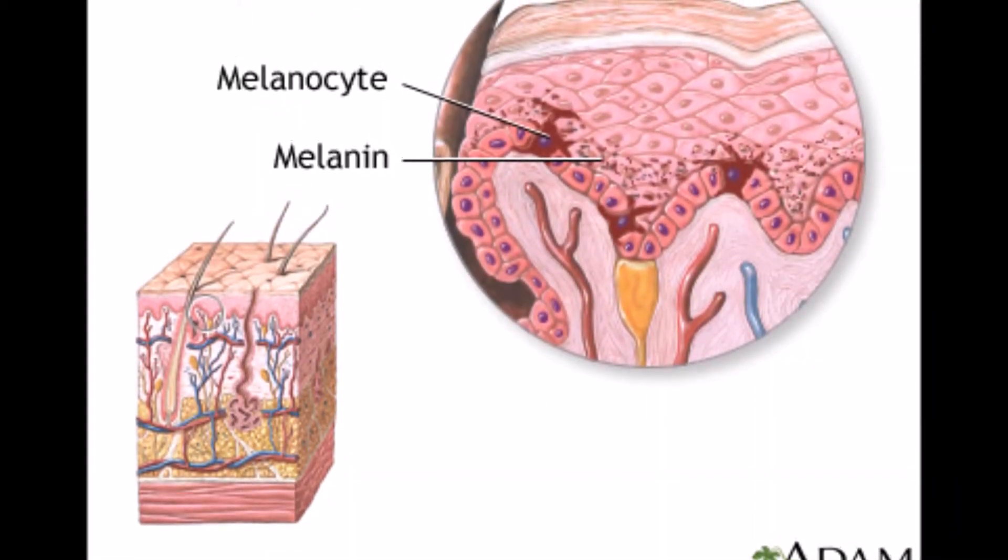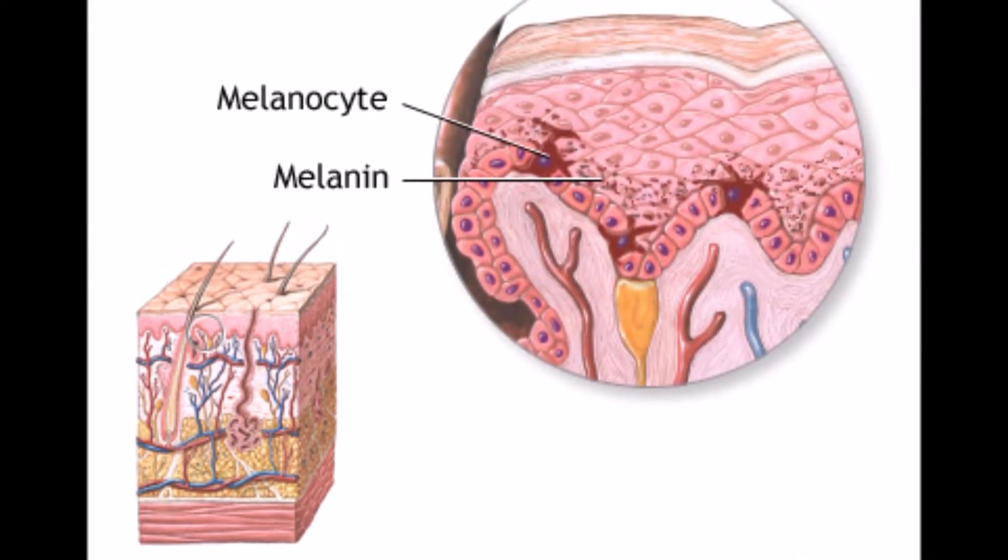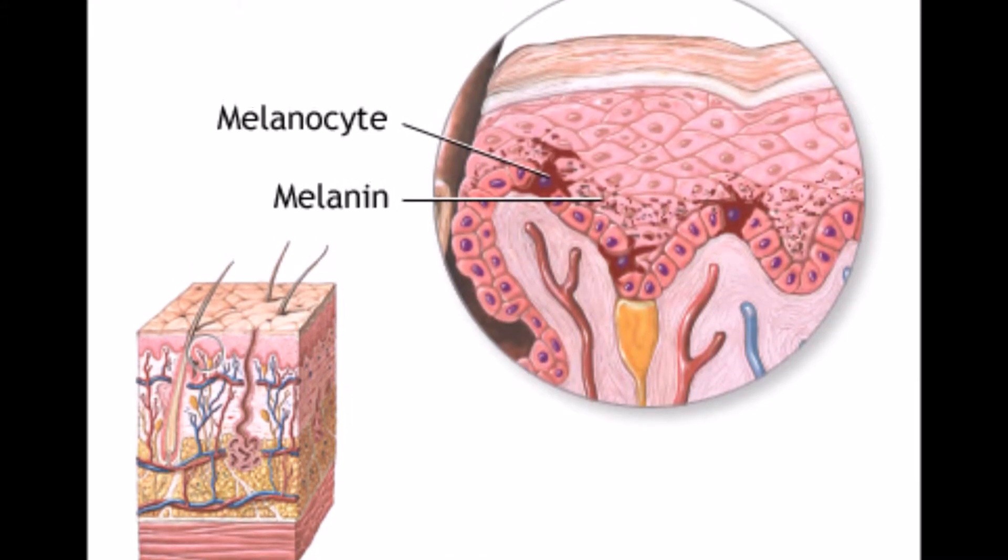Melanin, stored in cells called melanocytes, is part of what gives organisms, including bananas, their pigmentation. It is found in many plants, animals, and microorganisms.